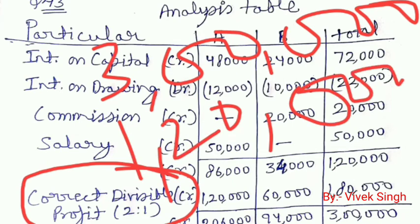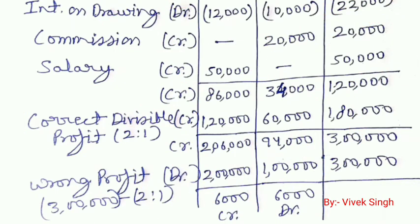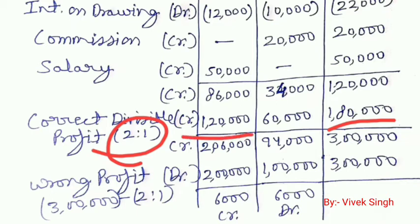The divisible profit is 1,80,000. This will be distributed to the partners in the ratio of 2:1. So A receives 1,20,000 and B receives 60,000.